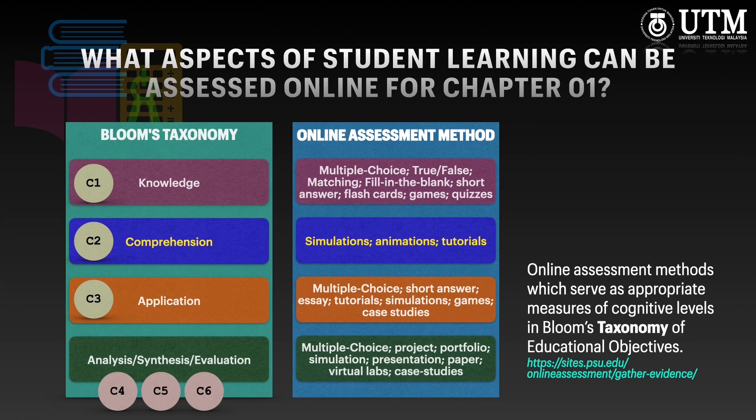As you can see from these colorful figures, they show taxonomies and the suitable assessment methods to address each taxonomy. Based on the cognitive level of C3, you will be assessed on your skill to apply thermodynamics relevant concepts. Several methods can be used to measure the skill, such as multiple choice, short answer, essay, tutorials, simulations, games or case studies.